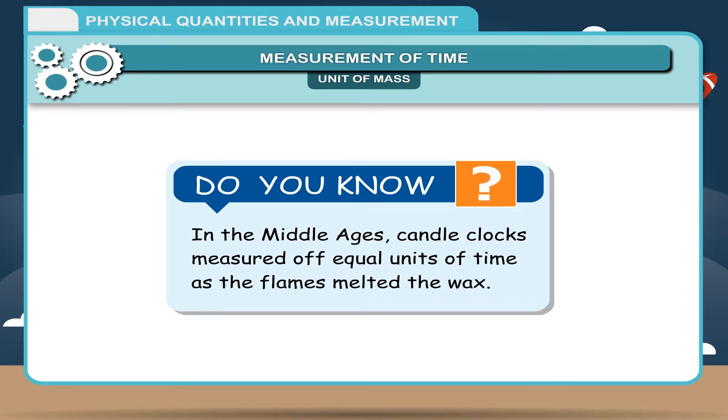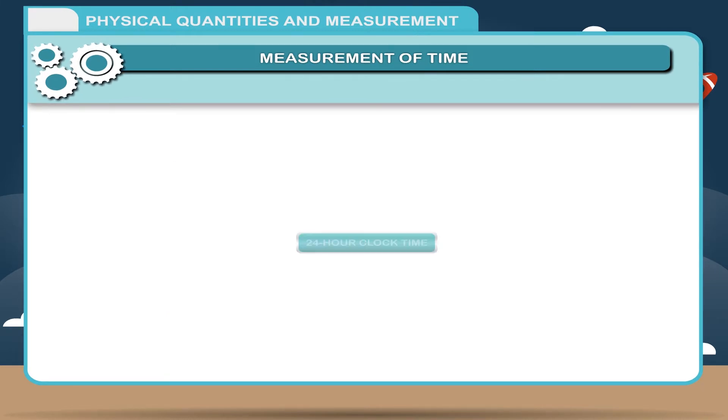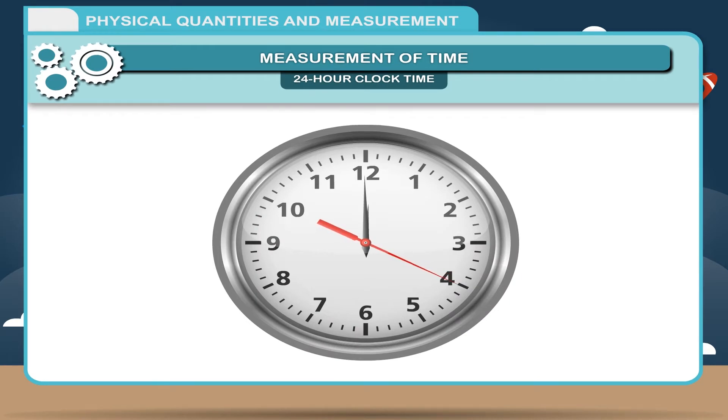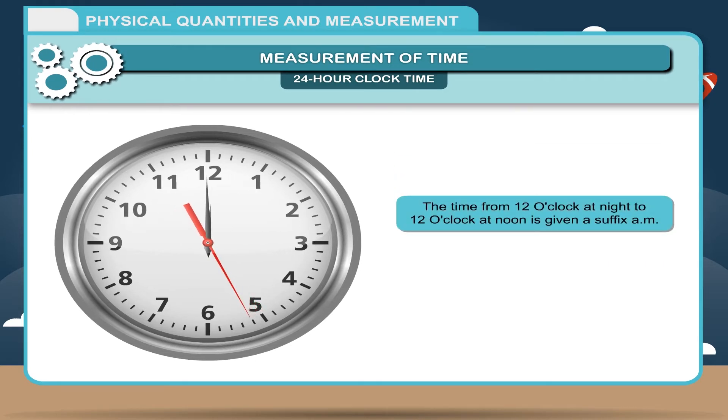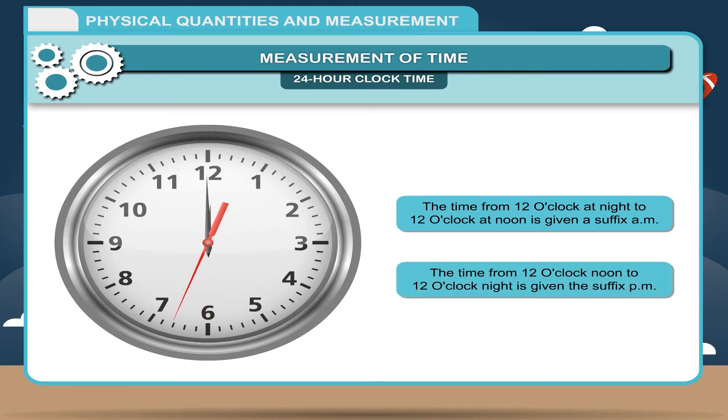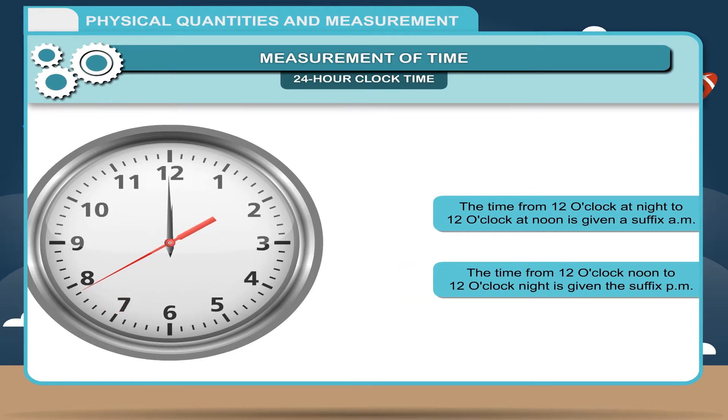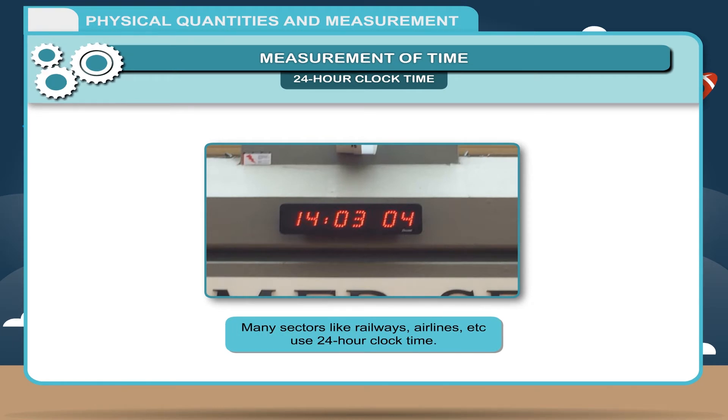24 hour clock time. Commonly, we use a 12 hour clock. In such a clock, the time from 12 o'clock at night to 12 o'clock at noon is given a suffix AM. And the time from 12 o'clock noon to 12 o'clock night is given the suffix PM.